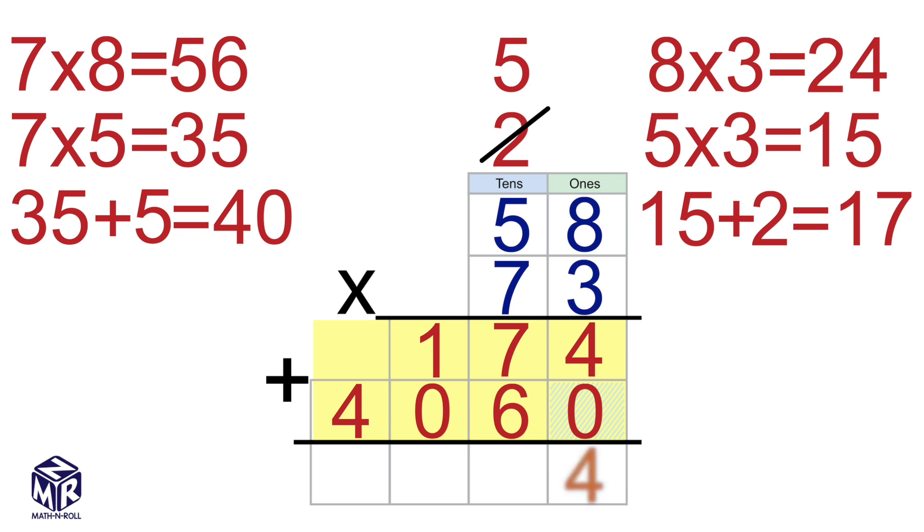4 plus 0 equals 4. 7 plus 6 equals 13. Carry the 1. 1 plus 1 plus 0 equals 2. Bring down the 4. So 58 times 73 equals 4234.